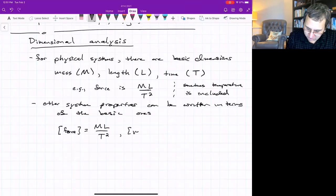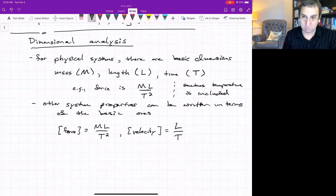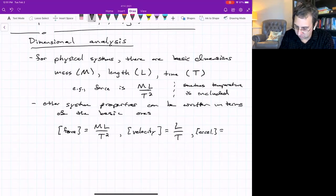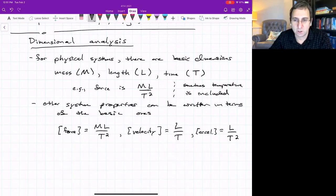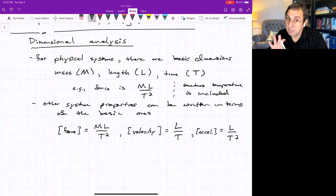What about dimensions of the velocity of something? That's going to be length per unit time. Or the acceleration, that's how the velocity changes with time. So it's going to be length over time squared and so on. So for material, physical things, there will be these basic dimensions.